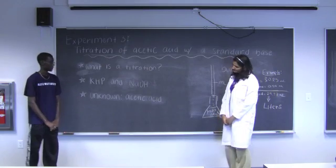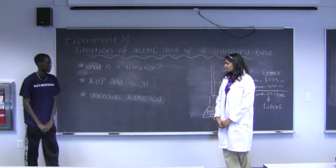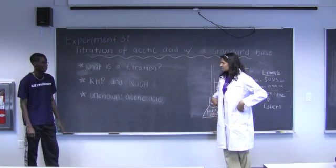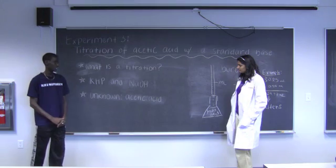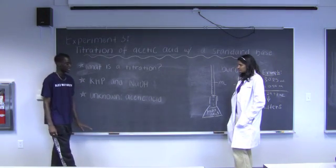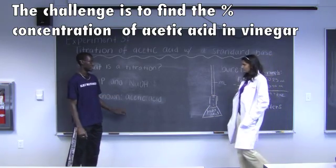For the second part of this experiment, we're going to use our standardized sodium hydroxide, whose concentration has already been found. We're going to use the sodium hydroxide to find the concentration of the analyte, which is acetic acid. By titrating with the sodium hydroxide, we can find the concentration of the acetic acid.